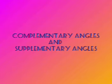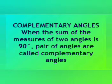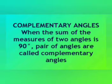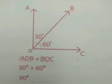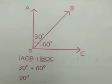Today we are going to see what are complementary angles and supplementary angles. First, complementary angles: when the sum of the measures of two angles is 90 degrees, that pair of angles is called complementary angles. For example, angle AOB is 30 degrees and angle BOC is 60 degrees — so 30 plus 60 equals 90 degrees. If we add two angles and get 90 degrees, they are complementary angles.